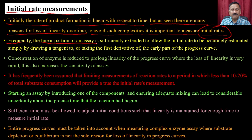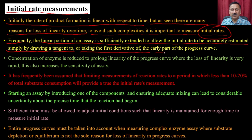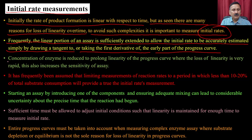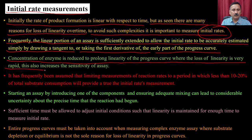Frequently, the linear portion of an assay is sufficiently extended to allow the initial rate to be accurately estimated simply by drawing a tangent or taking a first derivative of the early part of the progress curve. Reducing the concentration of enzyme prolongs the linearity of the progress curve. This also increases the sensitivity of the assay, since the initial linear region is very sensitive to inhibitors or other changes.